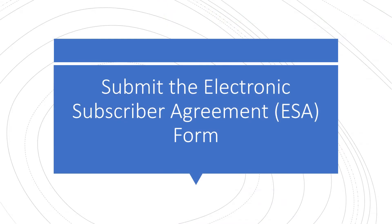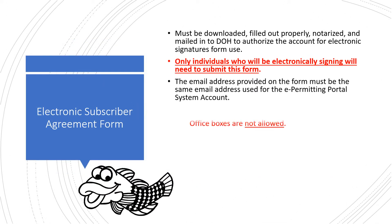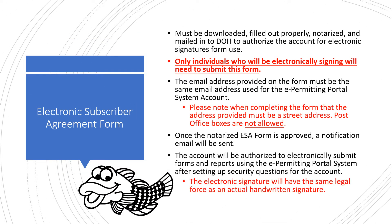To complete the Electronic Subscriber Agreement or ESA form, please follow these instructions. An ESA form must be downloaded, filled out properly, notarized, and mailed to DOH to authorize the account for electronic signature use.